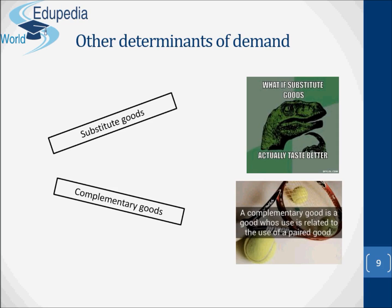The number and price of complementary goods — complementary goods are those that are consumed together, for example cars and petrol, paper and ink cartridges, fish and chips. The higher the price of complementary goods, the fewer of them will be bought and hence the less will be the demand for the good under consideration. For example, the demand for batteries will depend on the price of handheld games. If the price of handheld games comes down so that more are bought, the demand for batteries will rise.